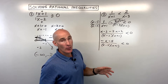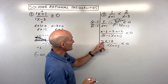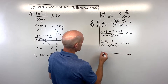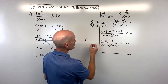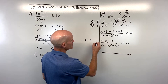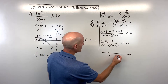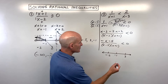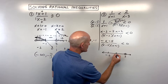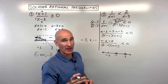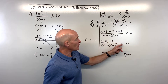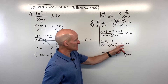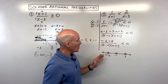Now we've got everything in one fraction, fully factored. We're going to set the factors to zero. Setting negative x minus five equal to zero gives us negative five. Setting x minus three equal to zero gives three. Setting x plus one equal to zero gives negative one. We plot them on the number line from lowest to highest. The denominator cannot be zero, so at three and negative one those are going to be open circles. The numerator can be zero, but since we're looking for strictly less than zero, at negative five this is also open.